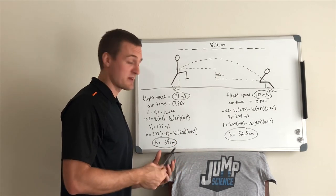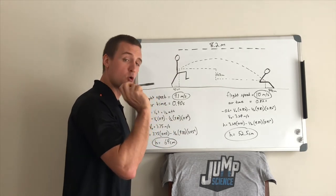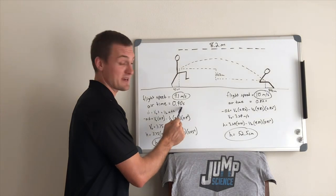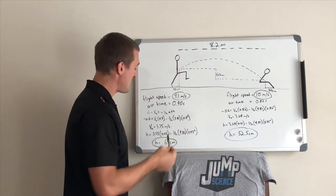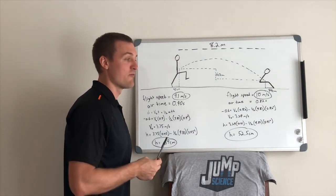A couple examples of how that could be accomplished. One, we got 9.1 meters per second horizontal flight speed. To get 8.2 meters, we would need 0.90 seconds in the air. We do a little math. We find out that that would require a 69 centimeter vertical jump.